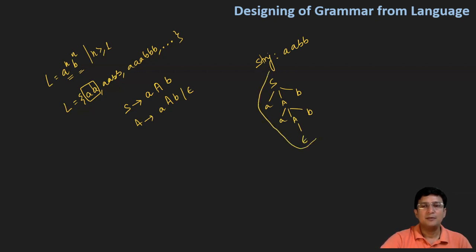So derivation gives double a, epsilon and double b. This means that you have derived that string from this grammar. So this is the grammar for a power n and b power n.